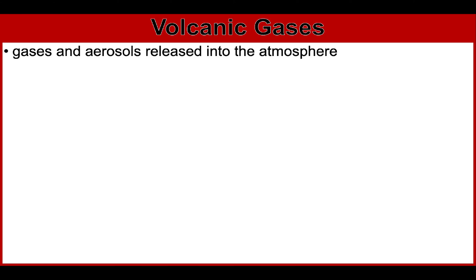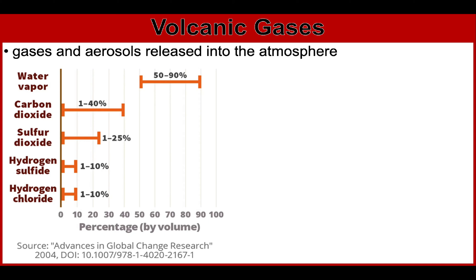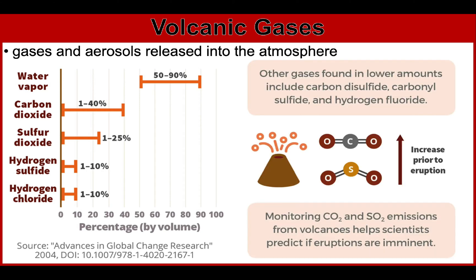The next hazard is volcanic gases — gases and aerosols released into the atmosphere, which include water vapor, carbon dioxide, sulfur, hydrogen sulfide, and hydrogen chloride. These volcanic gases pose hazard to people, animals, agriculture, and properties. Other gases include carbon disulfide, carbonosulfide, and hydrogen fluoride. One of the most dangerous is sulfur dioxide, which can lead to acid rain when it mixes with oxygen to form sulfur trioxide, which then reacts with water to form sulfuric acid. High concentrations of carbon dioxide, which is colorless and odorless, can be lethal to people, animals, and vegetation. Fluorine compounds can deform and kill animals that graze on vegetation covered with volcanic ash.